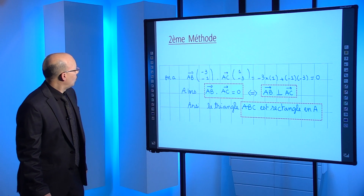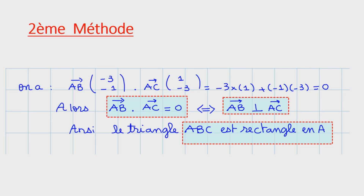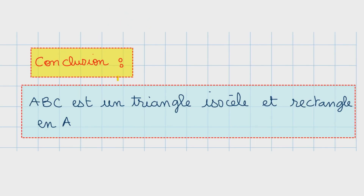Deuxième méthode pour démontrer que le triangle est rectangle : on peut utiliser le produit scalaire. Le vecteur AB a pour composantes (-3, -1) et le vecteur AC a pour composantes (1, -3). Le produit scalaire AB·AC = (-3)(1) + (-1)(-3) = -3+3 = 0. Donc les vecteurs AB et AC sont orthogonaux, ainsi le triangle ABC est rectangle en A.